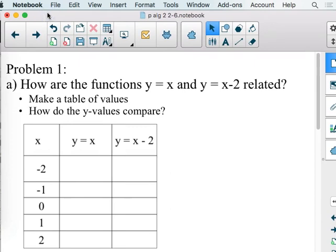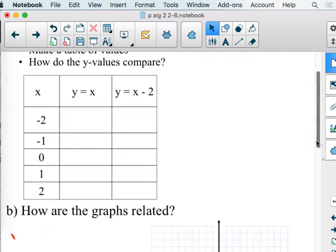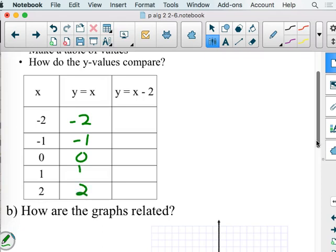So problem one says, let's just get a look at this. Let's get a visual of what happens when you're doing all of these translations. So how are the functions y equals x and y equals x minus 2 related? Make a table of values and then talk about how they compare. Okay. Well we just talked about y equals x. That's a super cool line to graph. Because all you have to do is make your x's your y's. So it would be negative 2, negative 2, negative 1, negative 1, 0, 0, 1, 1, and 2, 2.